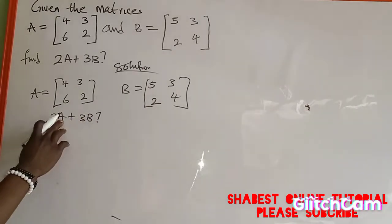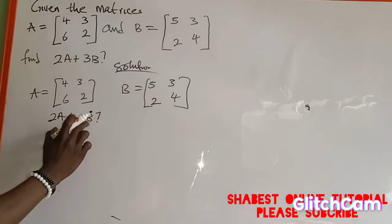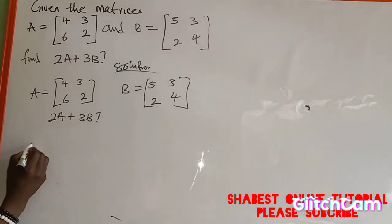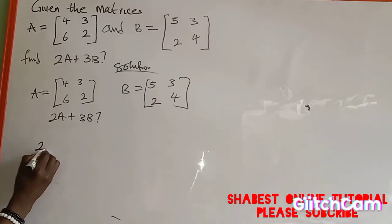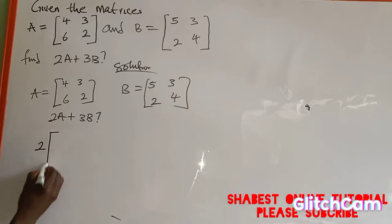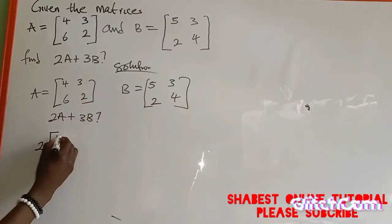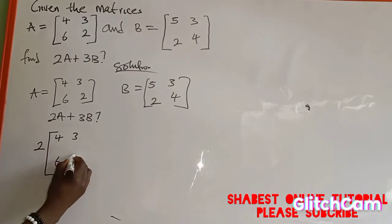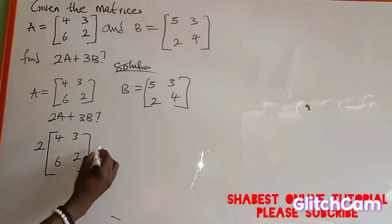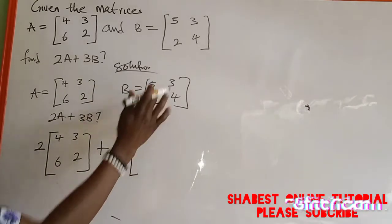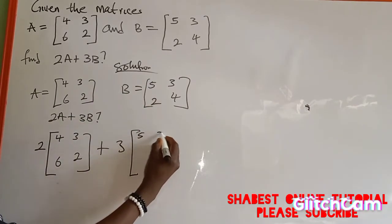To find 2A plus 3B, our A is given as this matrix and B is given as this matrix. 2A means 2 multiplied by A. To get my 2A, I'll have 2 into—instead of writing A, A represents this—so I'll write 4, 3, 6, and 2, plus 3B. Instead of B, I'll write 5, 3, 2, and then 4.